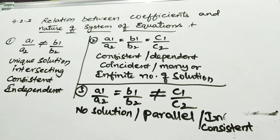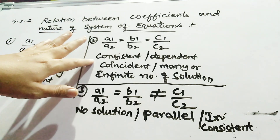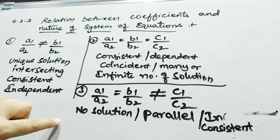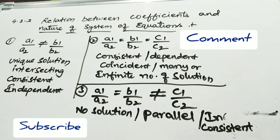By seeing the relation between coefficients, we find what type of equation it is — whether it is an intersecting pair, a coincident pair, or has no solution. This is your next topic. In coming classes, we will do important problems related to this topic. Just click on my bell icon for updated videos. Thank you.